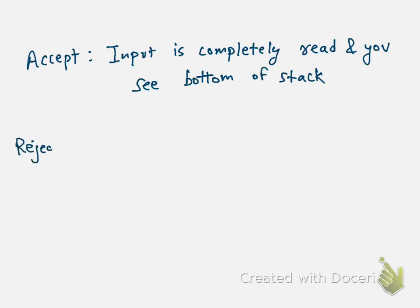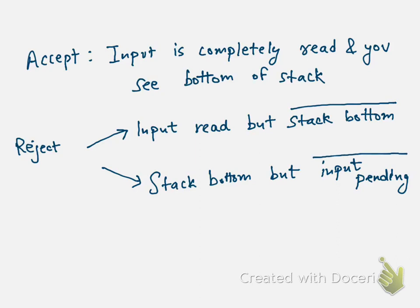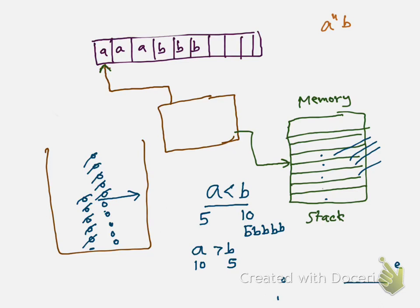A pushdown automata accepts when the input is completely read and you see the bottom of the stack. It rejects when the input is completely read but you don't see the bottom of the stack, or when you see the bottom of the stack but there is still input pending. That covers the basic principle of pushdown automata — it is exactly like a finite state automata with the addition of a stack. In the next lecture we will look at the formal definition of a pushdown automata.